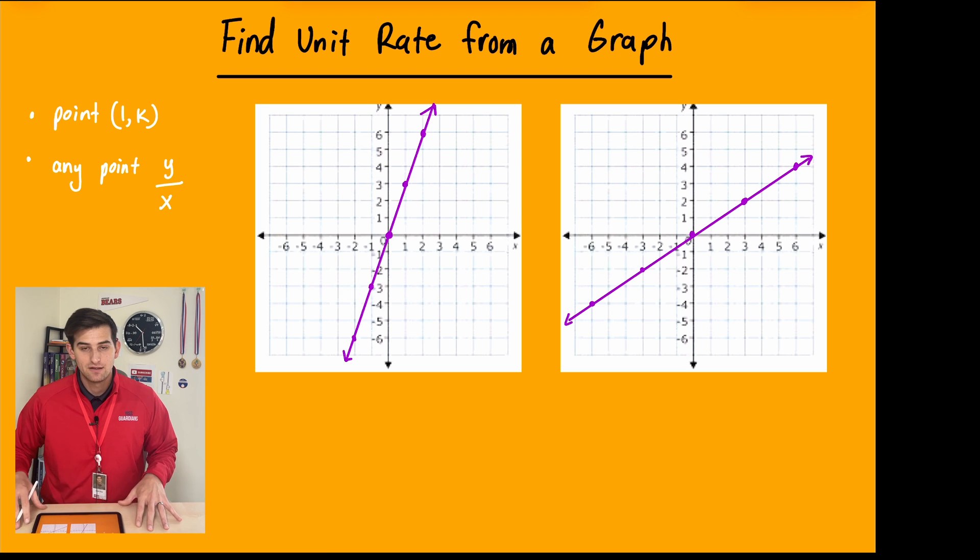So when we're looking at unit rate, most likely it's going to be some kind of a word problem when we're talking about unit rate. And we need to remember that unit rate is going to occur when we have a proportional relationship. So in this case, our graph is going to go through the origin and we see that all happening on both of our graphs here.